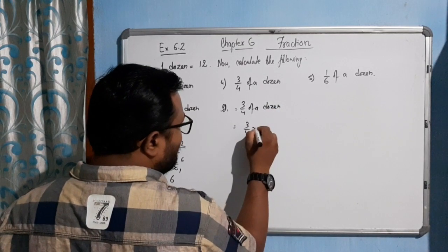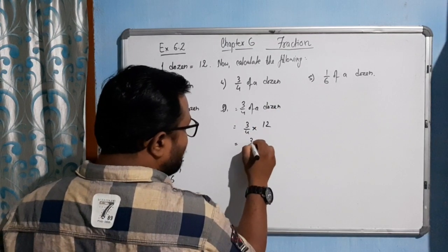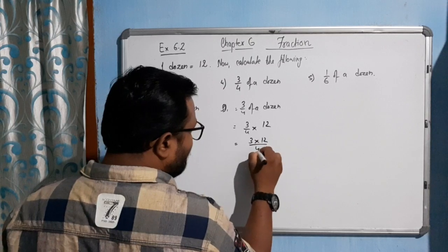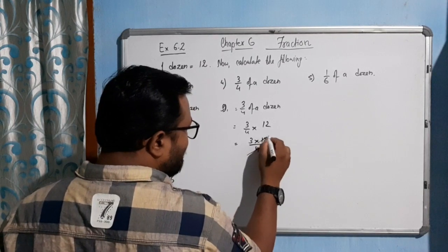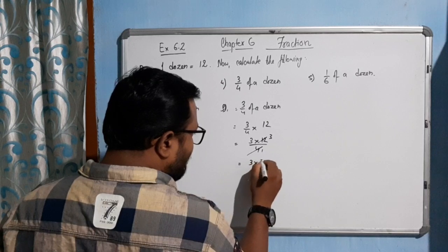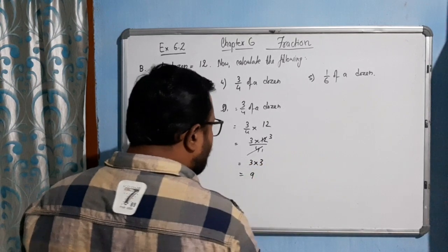We will write 3 by 4 into 12, or we can write 3 into 12 by 4. Now, 4 ones are 4, 4, 3s are 12. So 3 into 3 gives you 3, 3s are 9.